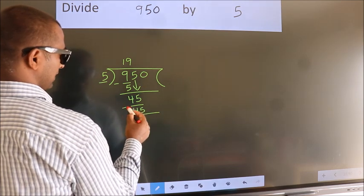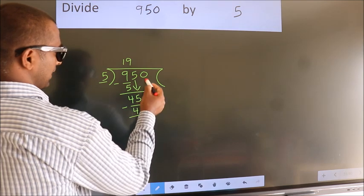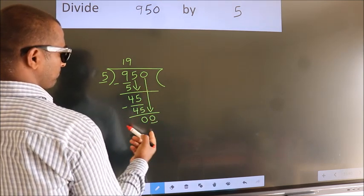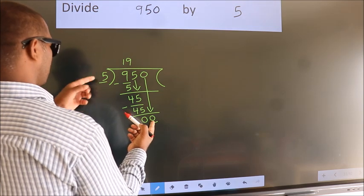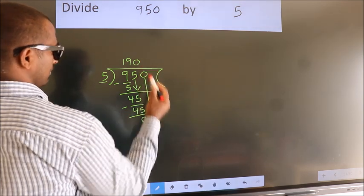Now, we subtract. We get 0. After this, bring down the beside number. 0 down. So, 0. When do we get 0? In the 5 table, 5 times 0, 0.